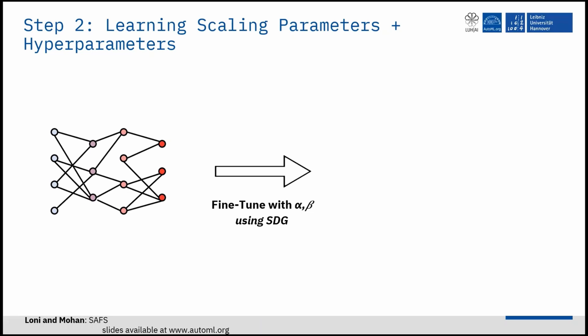To achieve better performance, we fine-tune the network and tweak scaling parameters. Due to the continuous nature of this stage, we use the stochastic gradient descent algorithm.